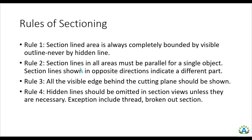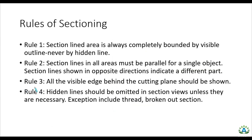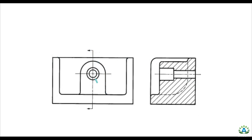Rule number 2: section lines in all areas must be parallel for a single object. Section lines shown in opposite directions indicate a different part. When we make hatching lines, they are inclined at 45 degrees and all parallel in the same direction. Two hatching lines in different directions denote different parts in an assembly drawing. Rule number 3: all visible features behind the cutting plane should be shown.